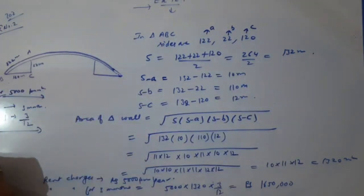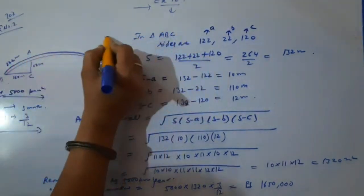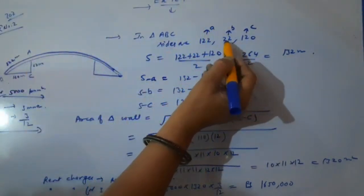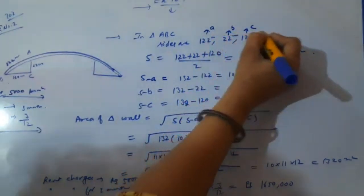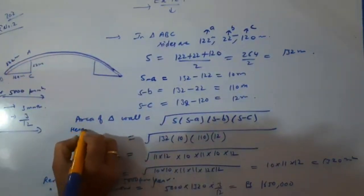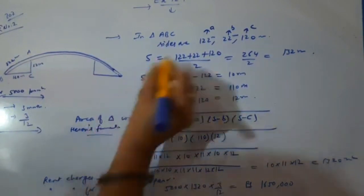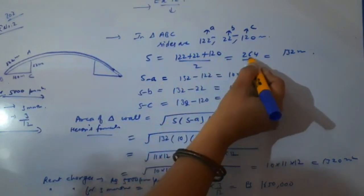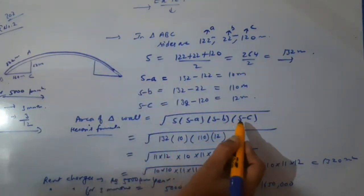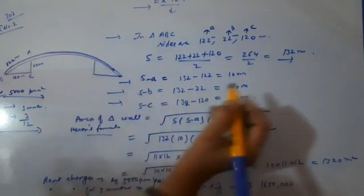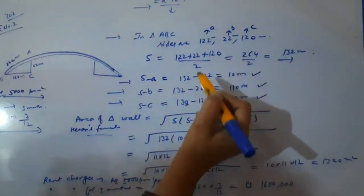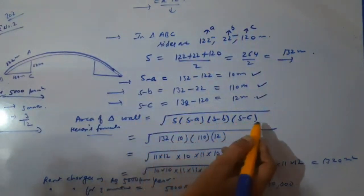How much rent did it pay? The sides of the triangular wall are 122 meter, 22 meter, and 120 meter. So S equals (122 + 22 + 120) / 2. We are getting S = 132 meter. Now S minus A = 10 meters, S minus B = 110 meters, and S minus C = 12 meters.